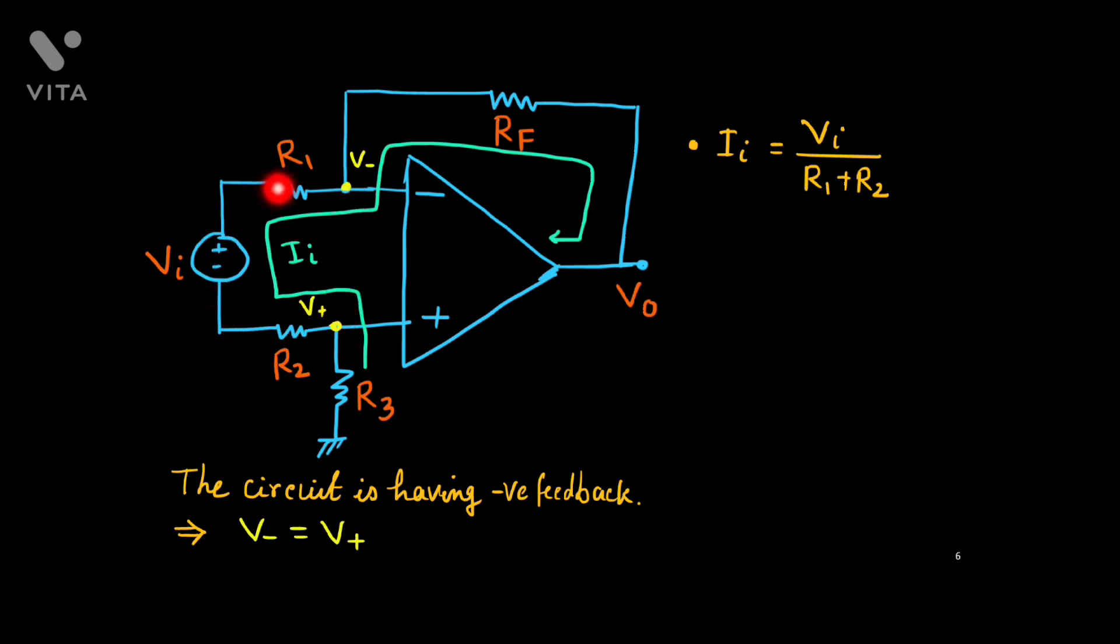So this is one circuit. So one resistance is R2, one resistance is R1. They are connected in series and the source is Vi. So current should be voltage upon total resistance R1 plus R2. Because this potential gap, V- and V+ is zero.